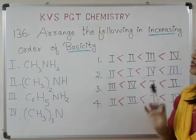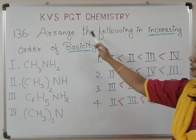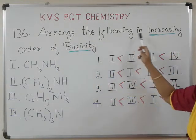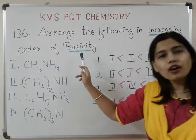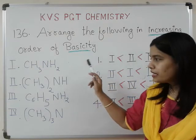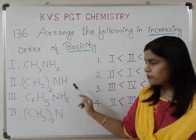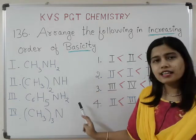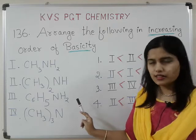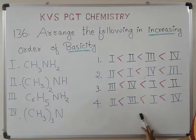Let's see what is asked in this question: arrange the following in increasing order of basicity. These are the given structures, and we have to arrange basicity in increasing order. These are the given options.